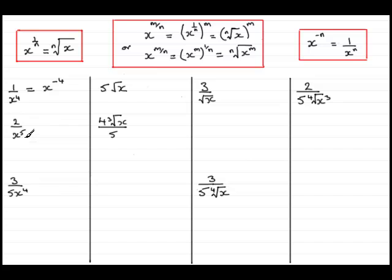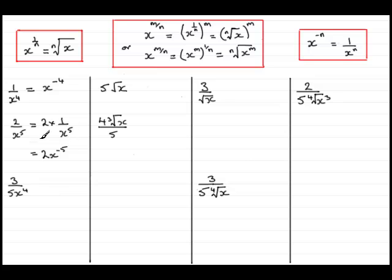In this next example I've changed it to a 2 in the numerator. When dealing with something like this we can think of this as 2 times 1 over x to the power 5. We've already seen that 1 over x to the power 5 is x to the minus 5, so we get 2 times x to the minus 5, which is 2x to the minus 5. With practice you should go directly to this stage. If we had 3 over x to the 5 it would be 3x to the minus 5; 5 over x to the 6 would be 5x to the minus 6, and so on.